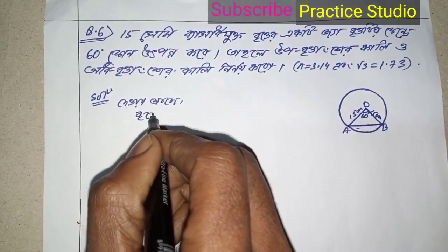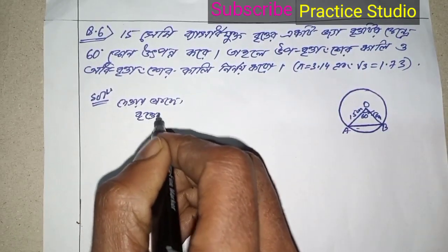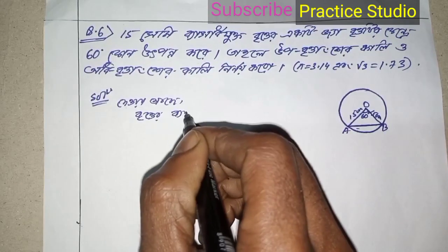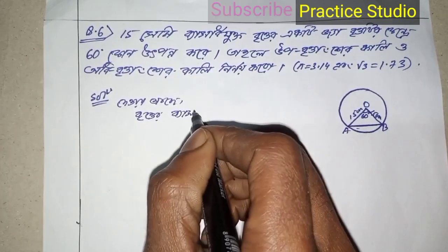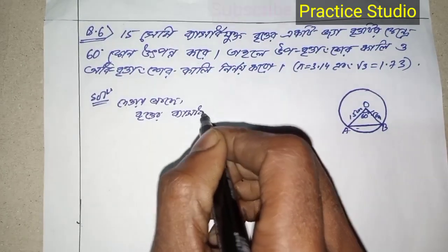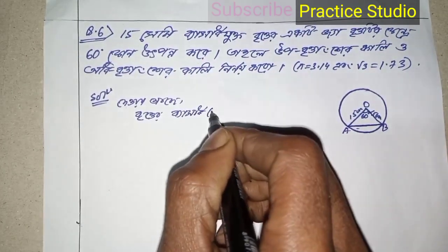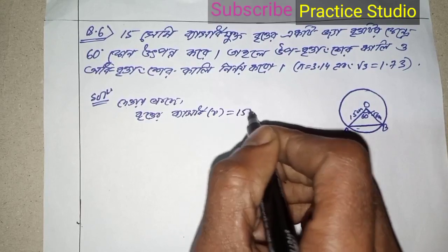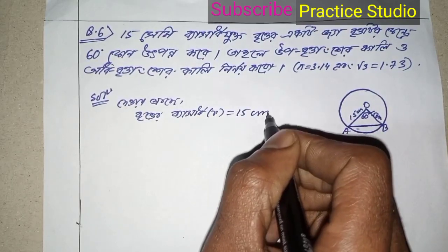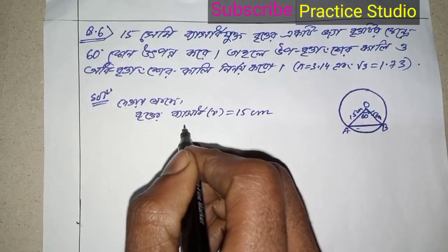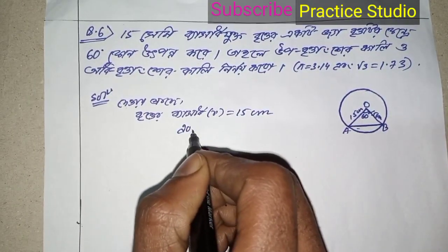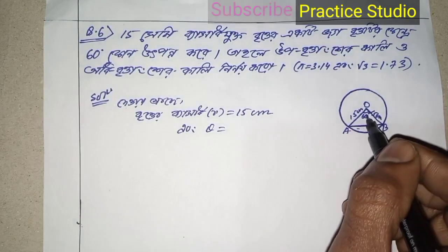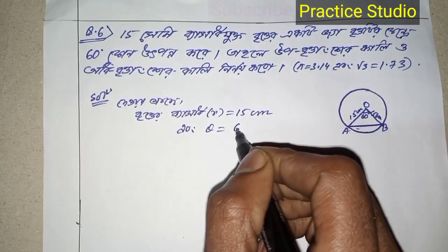The function will be found. The function is R equal to 15 cm. So it is 1260 degrees.